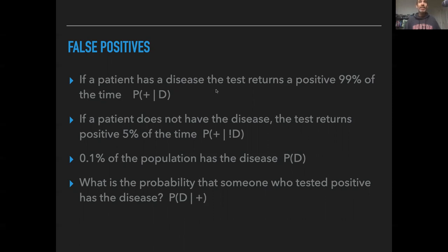If a patient has a disease, the test returns a positive 99% of the time. So the probability of getting a positive given that you have disease, P(+|D), for a particular test, let's say that's 99%. And that seems like a pretty high efficacy. That's a useful thing to know about a test. How often does it return a positive when you have the disease?